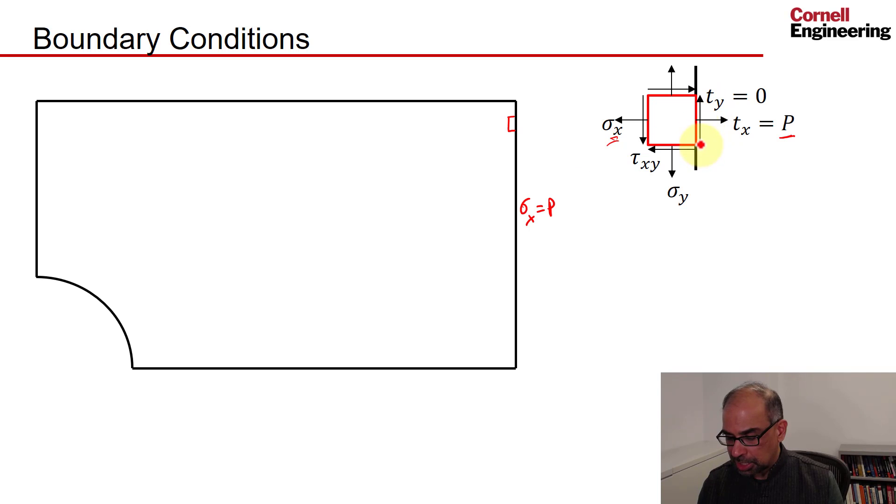What about in the y direction? On this face, the traction in the y direction, which is along the face, is zero. And that's tau xy. That means tau xy has to be zero. So that gives me the second boundary condition.